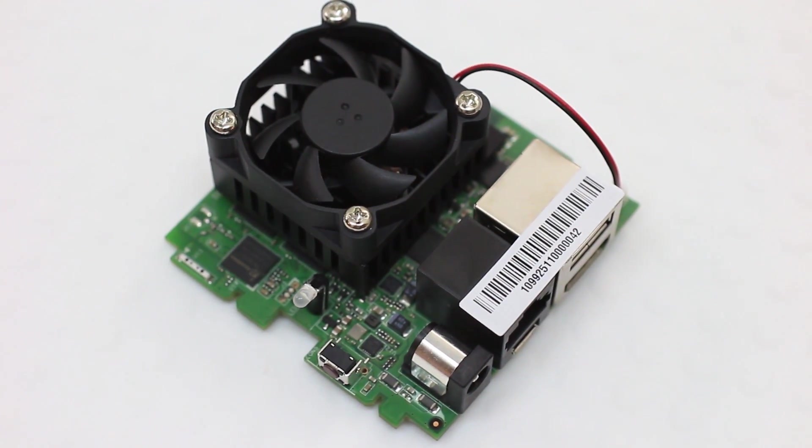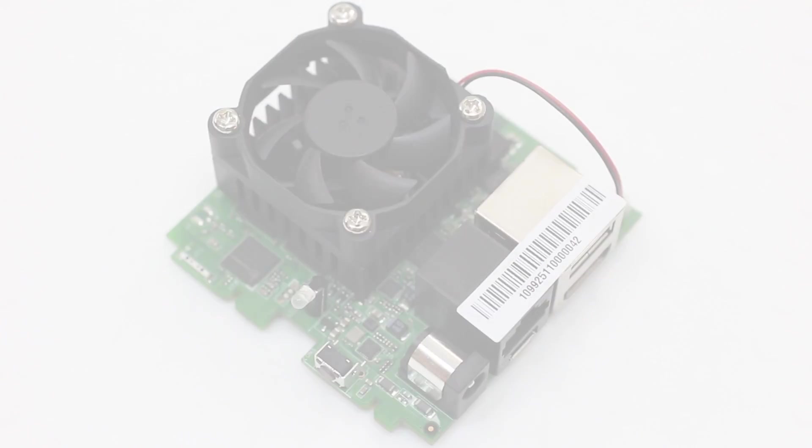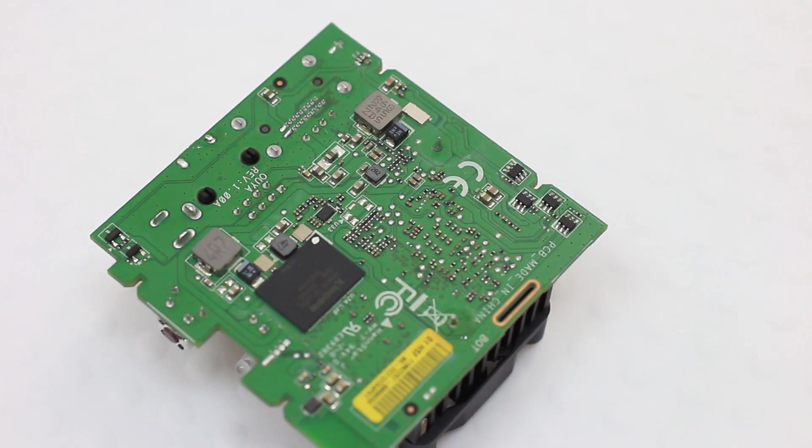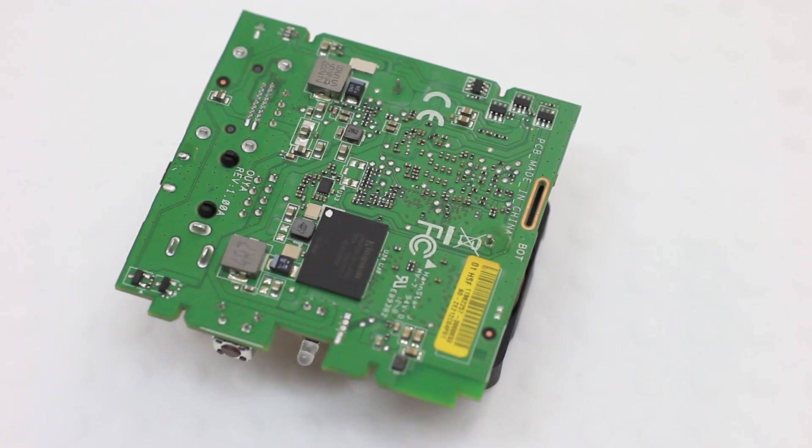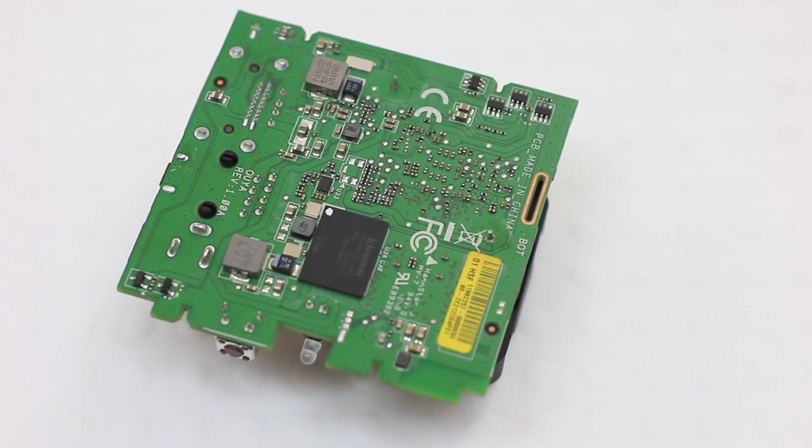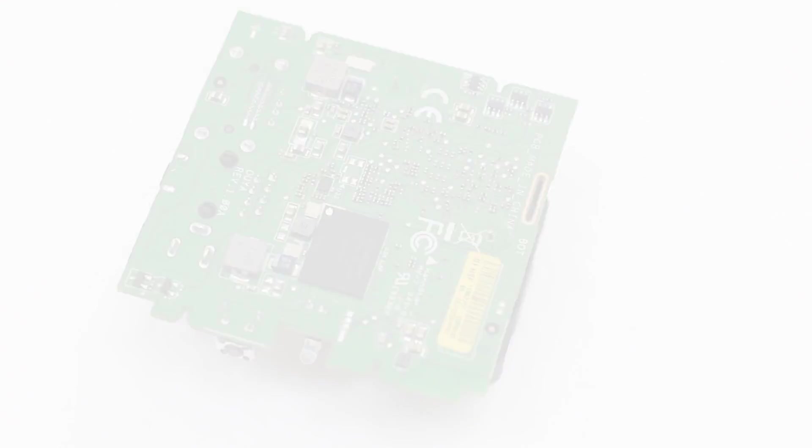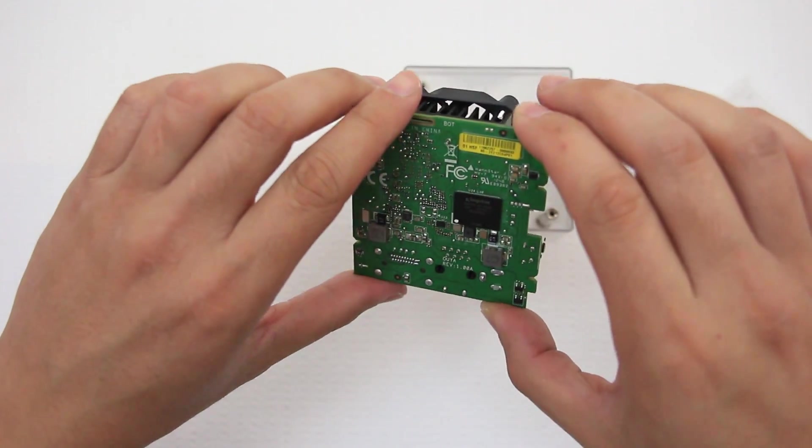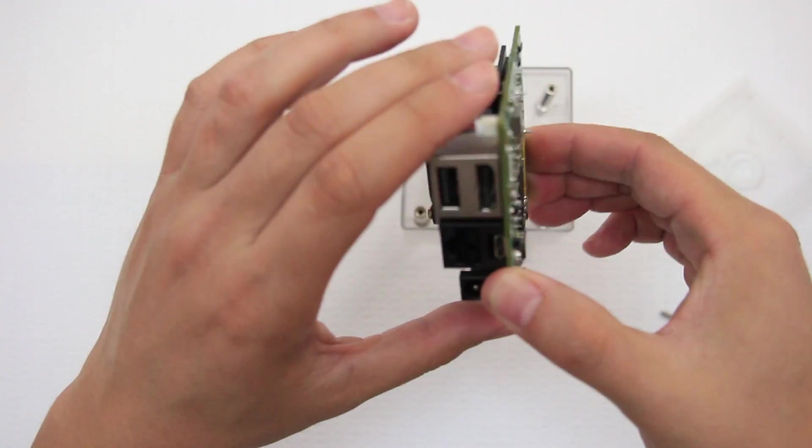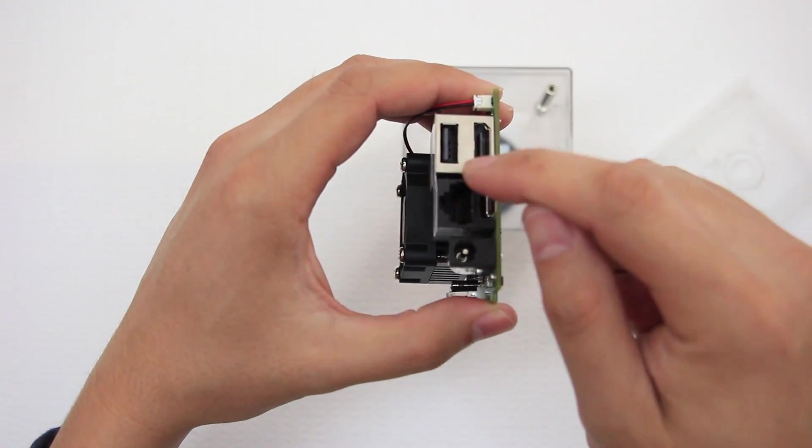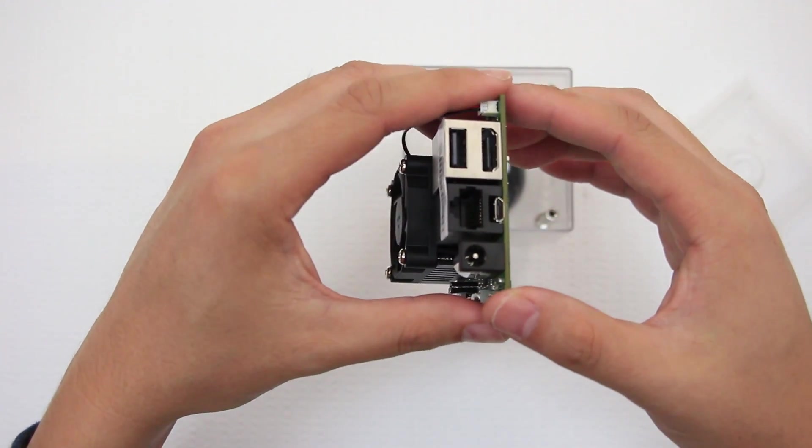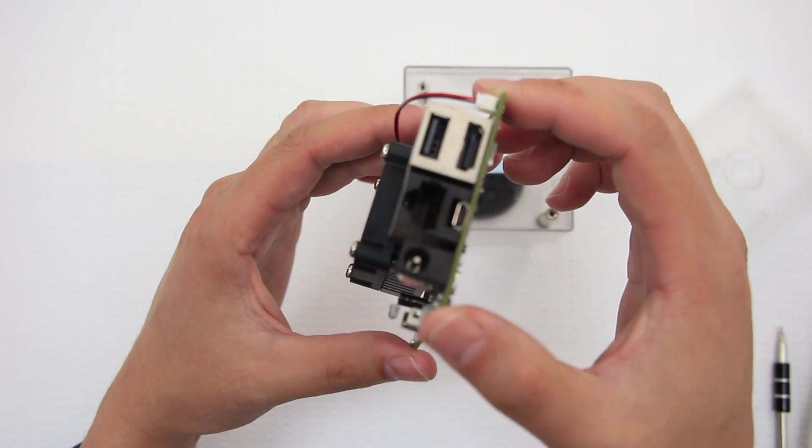Some of the specs on this, this is running a NVIDIA Tegra 3 processor, quad core processor with 1 gig of RAM. It has 8 gigs of internal flash storage with expandable memory using either the micro USB port here or the USB port. You could plug in a thumb drive and use external memory, accessing files or storing apps and everything like that.